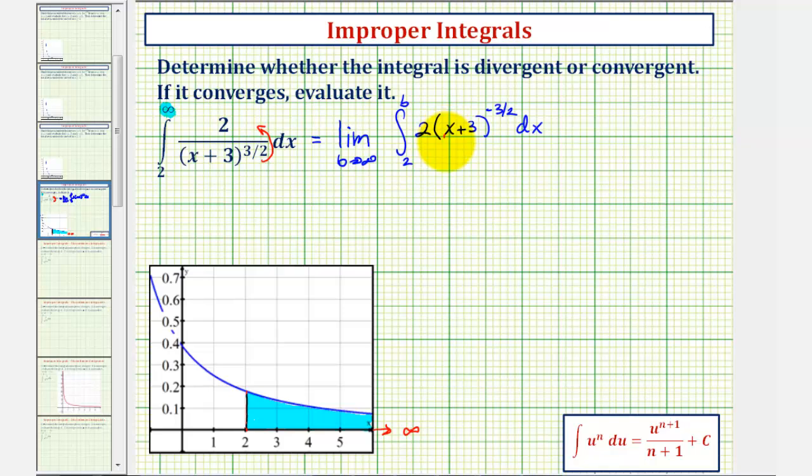If we let u equal x + 3, notice that differential u would equal u prime times dx, which is just 1 times dx or dx. Whenever differential u equals differential x, u-substitution is not required.